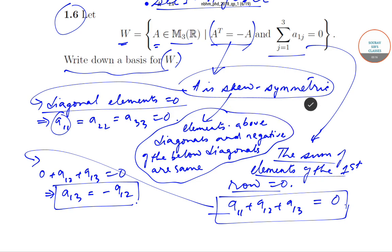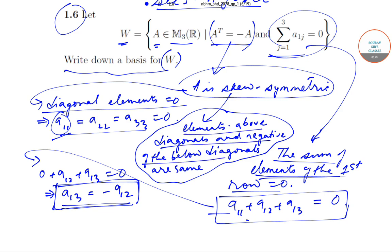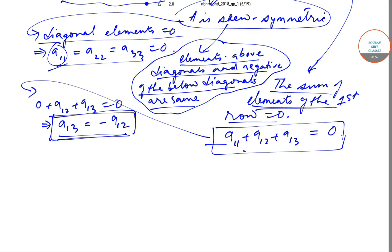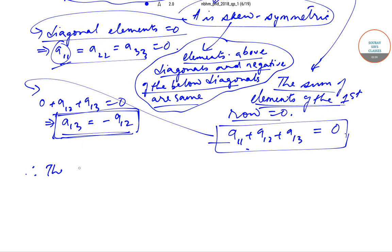So the conditions we have are: A is skew-symmetric, implying diagonal elements are 0; the sum of elements of the first row is 0, giving a_{13} = -a_{12}; and from skew-symmetry the elements above the diagonal are negatives of those below. Now let's look at what the matrix will look like.